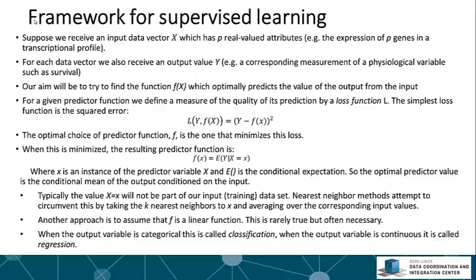And the aim of the machine learning approach would be to try to find the function f which takes our input and optimally predicts the value of the output. So one way to formulate this problem is in terms of a loss function. Now a loss function quantifies how close the prediction is to the truth.